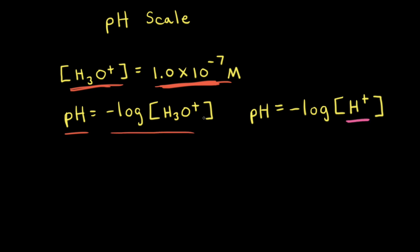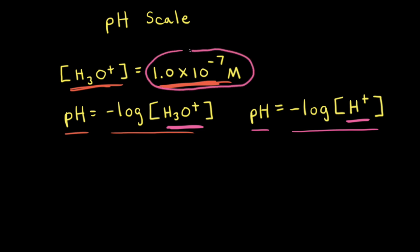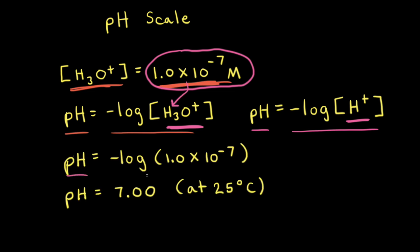Since H⁺ and H₃O⁺ are used interchangeably in chemistry, sometimes you'll see the pH equation written as pH equals the negative log of the concentration of H⁺ ion. So to find the pH of pure water, we just need to plug in the concentration of hydronium ions into our equation. The pH is equal to the negative log of 1.0 times 10 to the negative seventh, which is equal to 7.00. So the pH of pure water at 25 degrees Celsius is equal to seven.